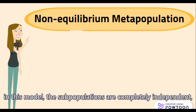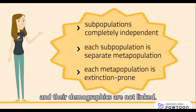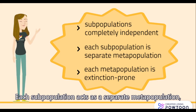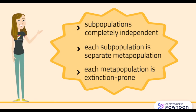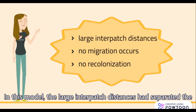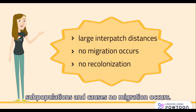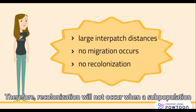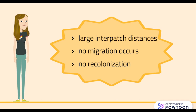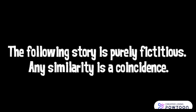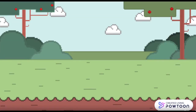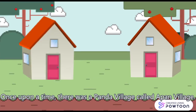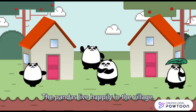In this model, the subpopulations are completely independent and their demographics are not linked. Each subpopulation acts as a separate metapopulation, and the metapopulation is extinction-prone due to its isolation and small size. The large interpatch distances have separated the subpopulations and cause no migration to occur. Therefore, recolonization will not occur when a subpopulation goes extinct.